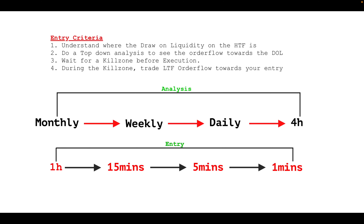Once you have your draw liquidity identified, you can start the top-down analysis to see the path towards the draw liquidity — from higher timeframe to lower timeframe. You follow the institutional order flow until you get your entry to trade towards the draw liquidity.